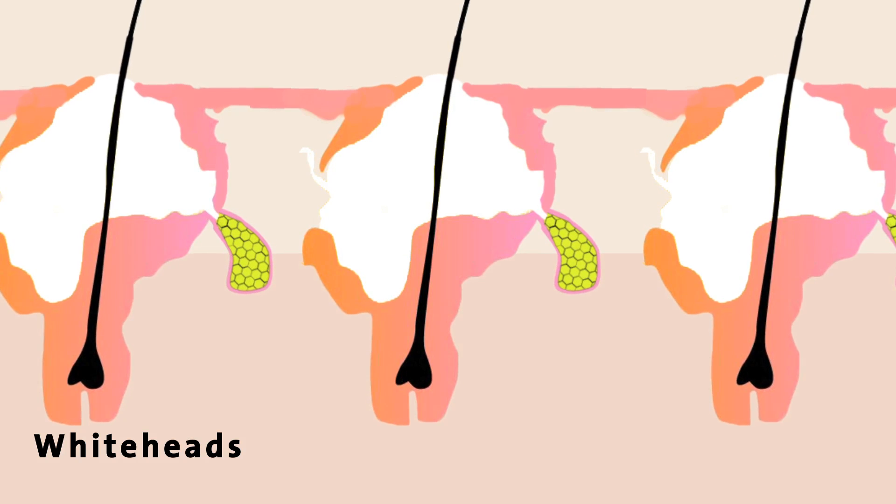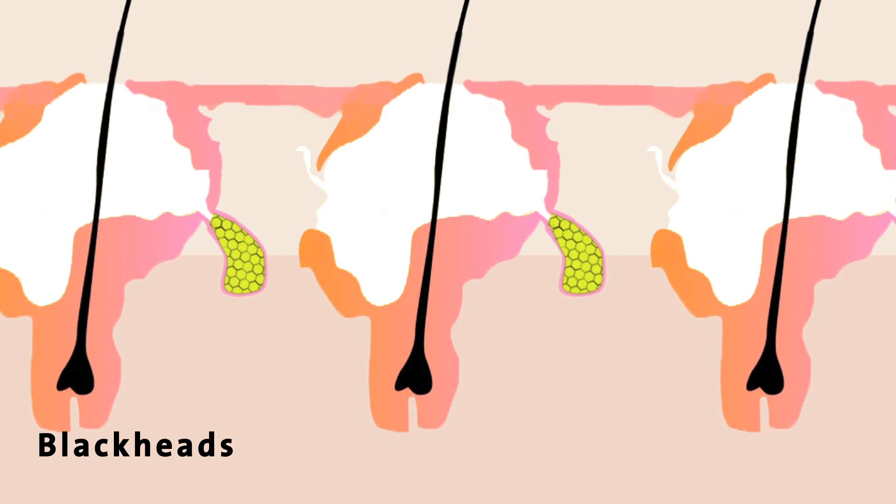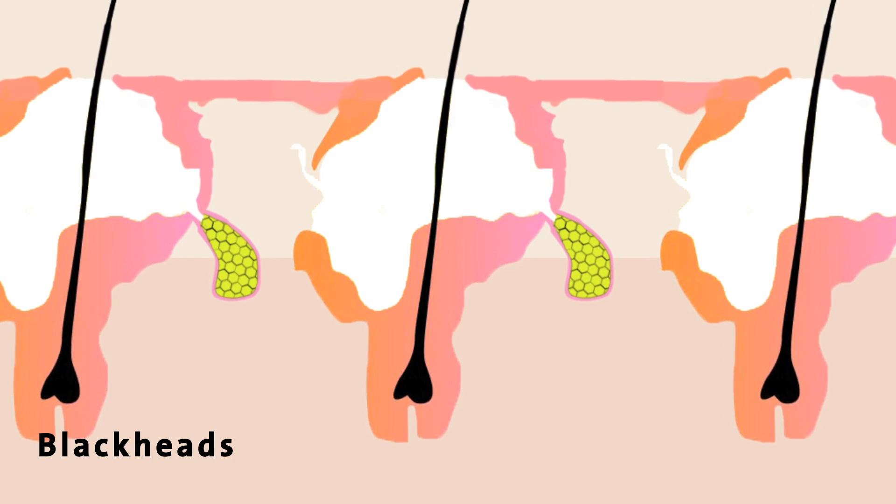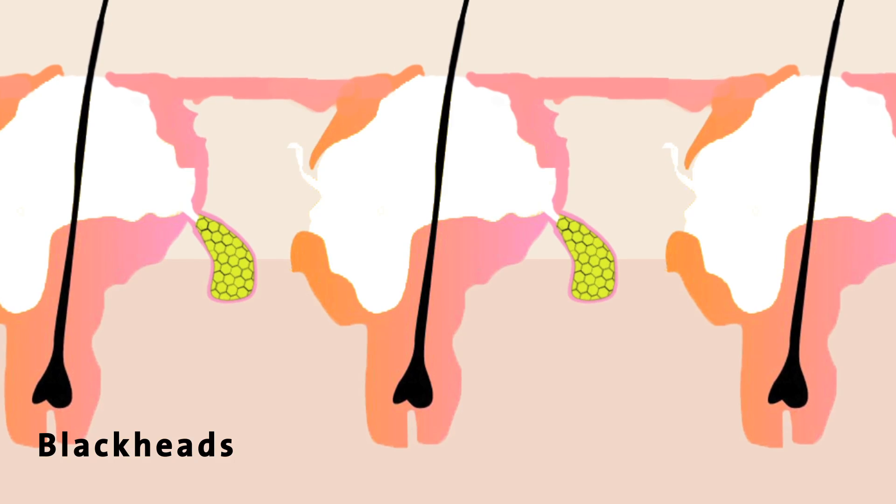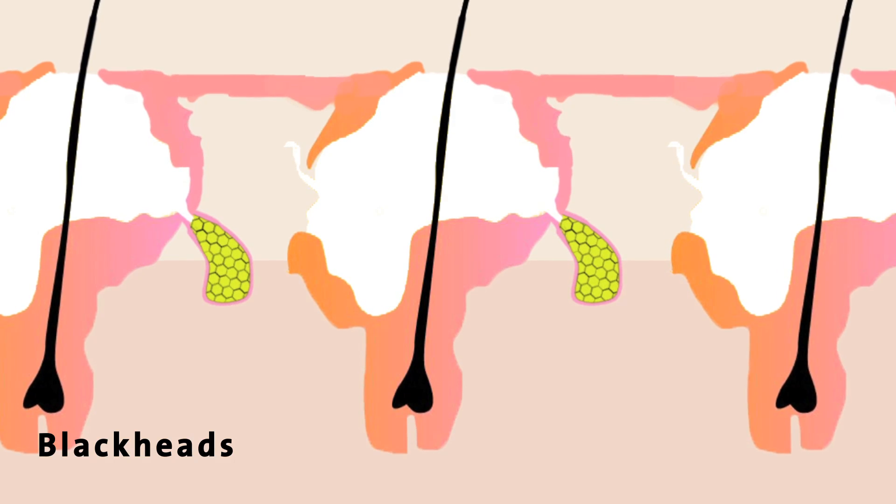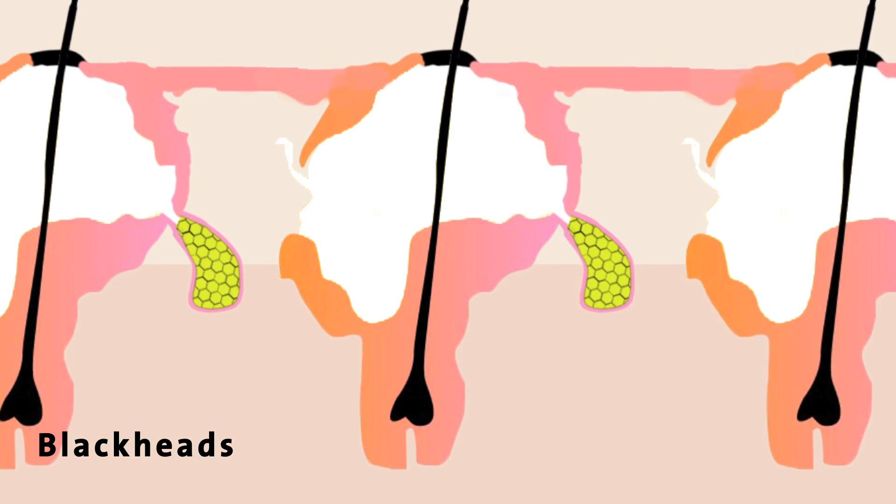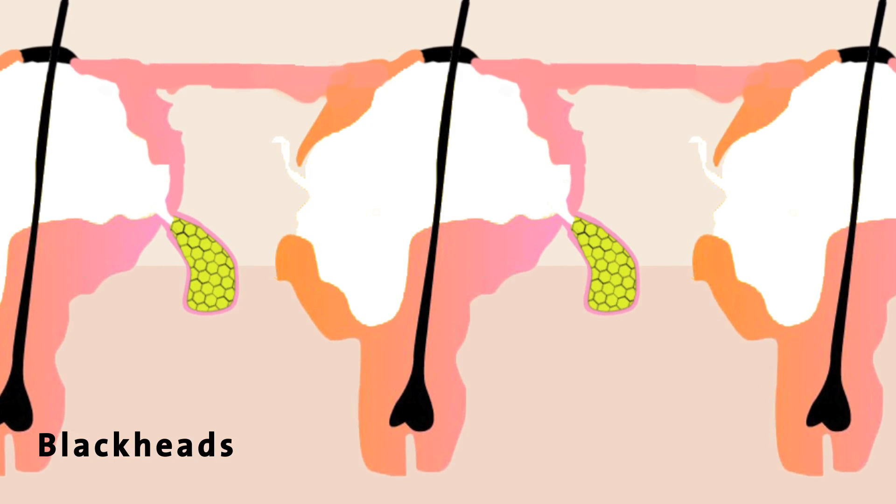Another type of pimple, called a blackhead, appears when sebum and dead skin cells clog the pore, but not the opening as in a whitehead. While the pore is clogged, its surface remains open. These pimples appear black because melanin in the dead skin cells reacts with oxygen from the air, which changes the melanin's color from brown to black.